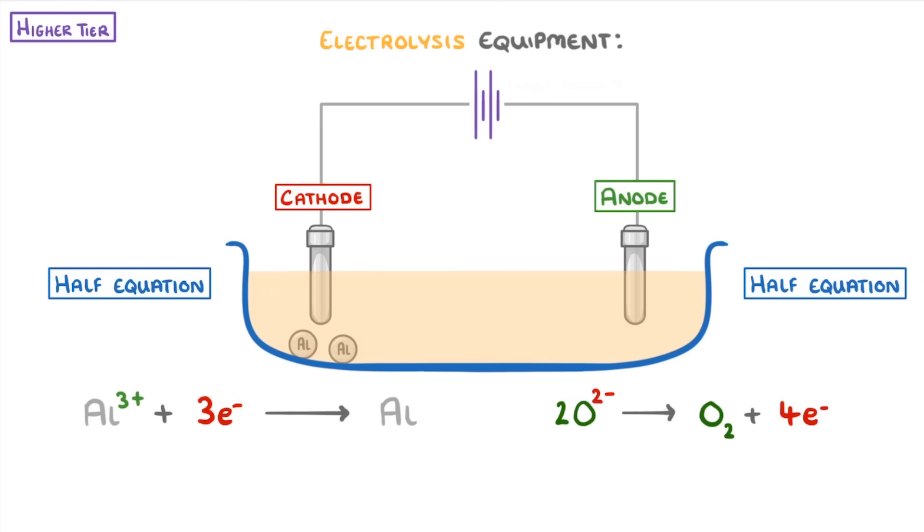Now, you might have noticed that because the oxygen ions are losing electrons at the anode, we can say that the oxygen is being oxidised, while the aluminium ions, which gain electrons, are being reduced.